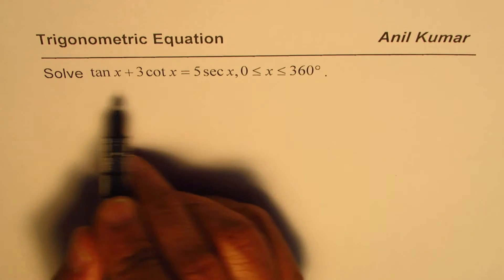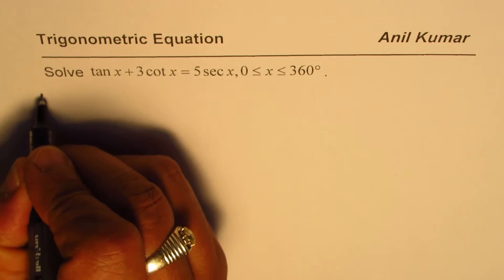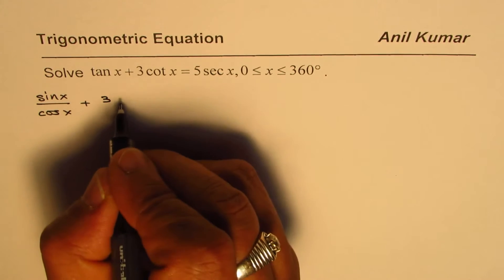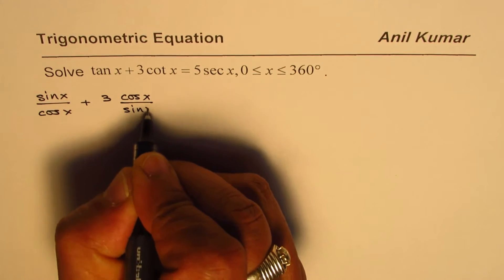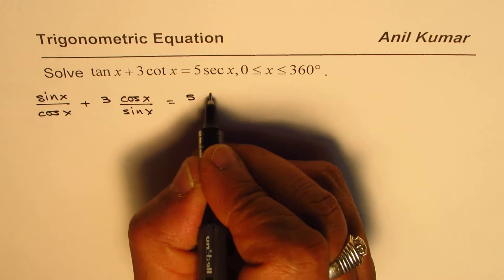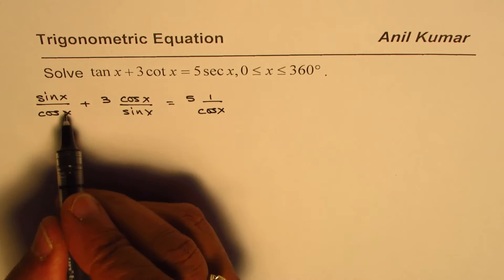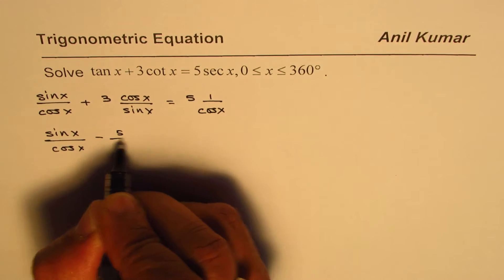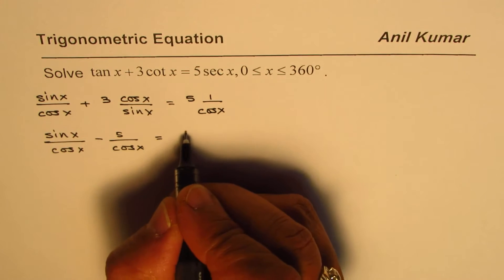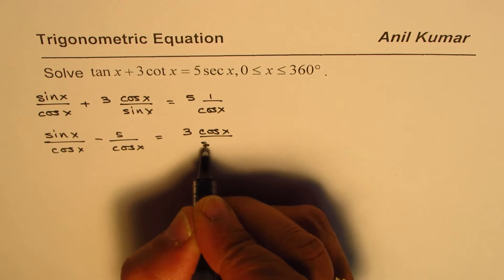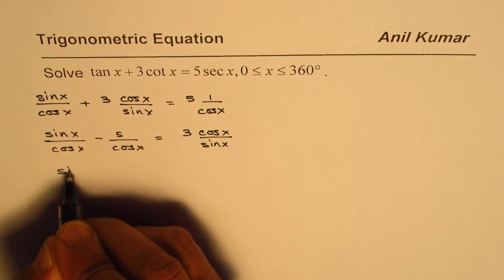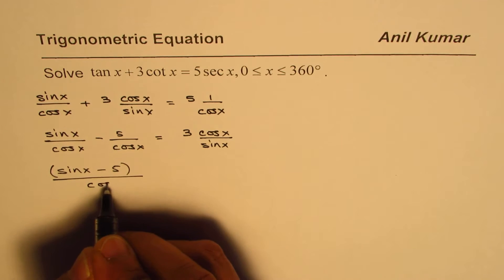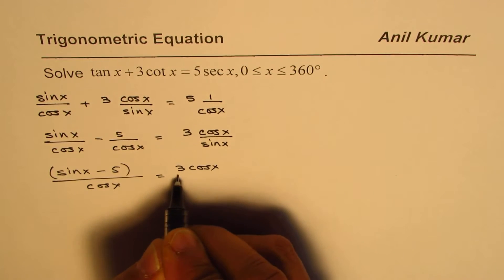We can write all these terms in terms of sine and cosine. So tan x is sin x over cos x, plus 3 times cot x which is cos x over sin x, equals 5 times sec x which is 1 over cos x. Bringing the cosine terms together, we get sin x over cos x minus 5 over cos x equals 3 cos x over sin x.